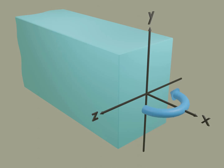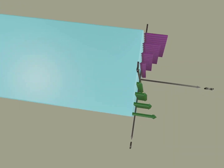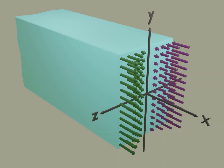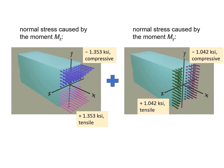Similarly, we can visualize the bending moment My, which is counterclockwise about the y-axis, as well as the normal stress elements caused by My. According to our previous calculation, it is tensile on the left and compressive on the right, with a maximum magnitude of 1.042 ksi.